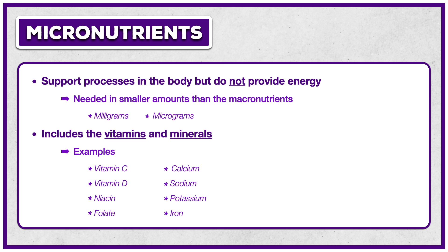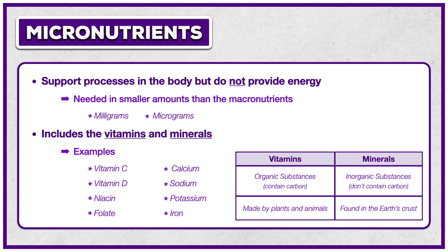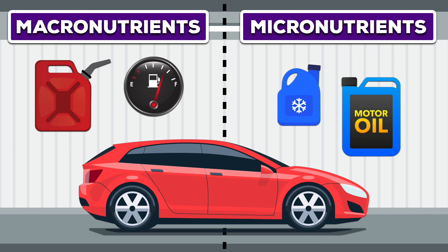The significant difference between vitamins and minerals is that vitamins are organic substances, meaning they contain carbon, whereas minerals are inorganic and do not. Vitamins are also made by plants and animals, while minerals are found in the Earth's crust. One easy way to remember the difference between macronutrients and micronutrients is the car analogy. If the body was a car, as energy-yielding nutrients, the macronutrients would be the gas that propels it. The micronutrients are like the oil and coolant — they don't propel the car like gas does, but they help support the processes that make it run smoothly.